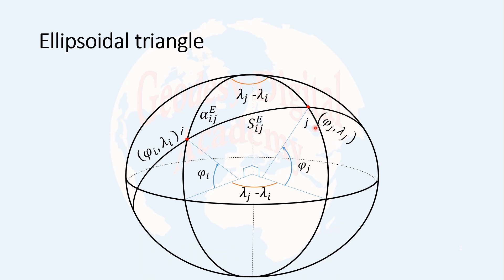Phi is geodetic latitude and lambda is geodetic longitude. When I say geodetic, we mean that the earth is an ellipsoid. So we know the two meridians go through points i and j, and these latitudes are defined at the meridian plane. This angle phi is measured from this line, which is normal to the ellipsoid, and the normal to the ellipsoid does not go through the center of the ellipsoid.